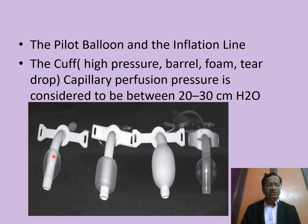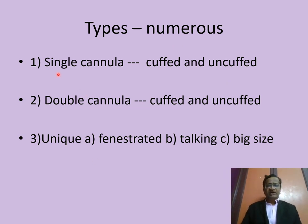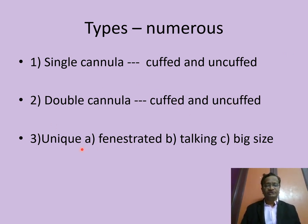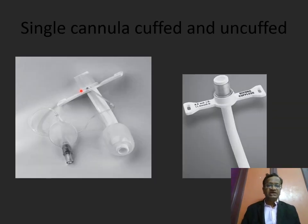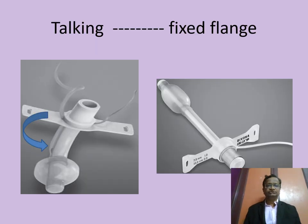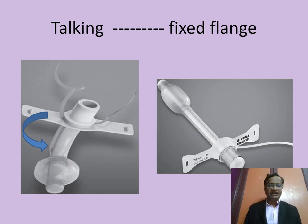There are innumerable types of cuffs: oval, rectangular, large oval. You can have single or double cannula tubes — that is the inner and outer tube. Double cannula may be cuffed or uncuffed. Fenestrated tubes have holes that allow talking when the patient is tracheostomized. Both cuffed and uncuffed versions are available.